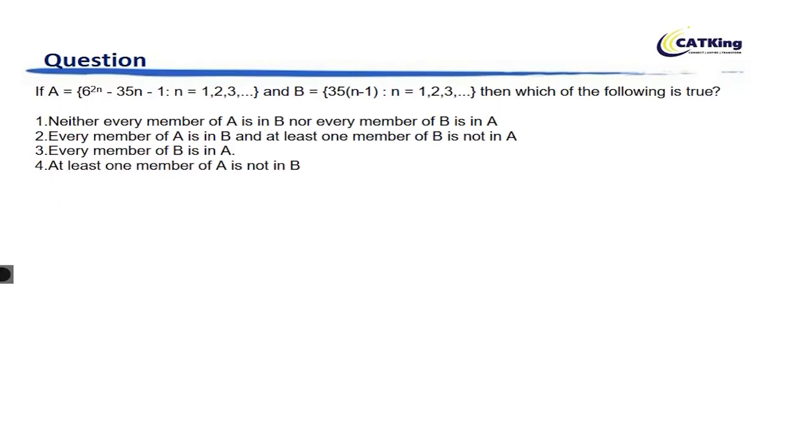Now it says that A is 6 to the power 2n minus 35n minus 1, and B is 35 times (n minus 1). We have to establish a relationship between A and B. See, B is a number which is always a multiple of 35.